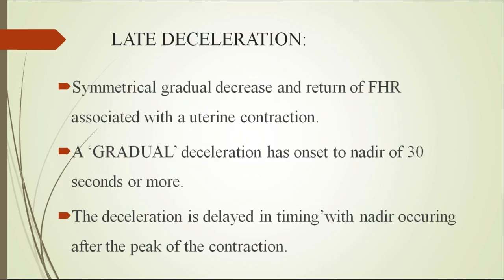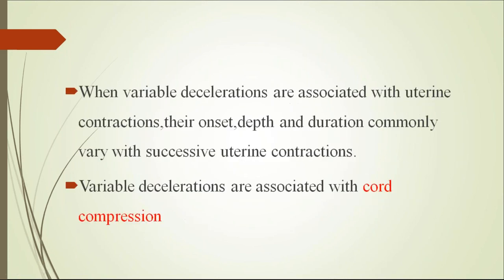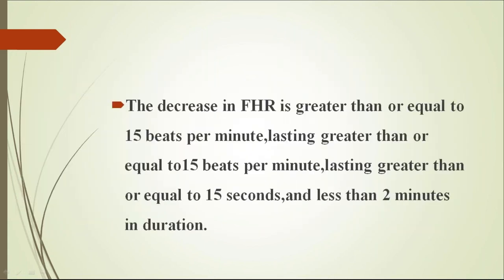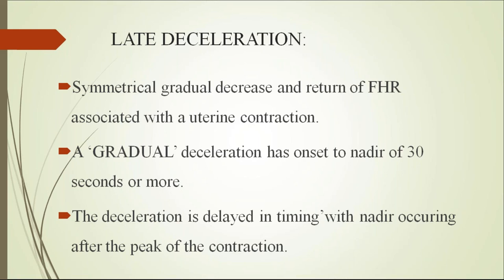Late deceleration: also a symmetrical gradual decrease and return of fetal heart rate associated with uterine contractions, but the deceleration is delayed in timing — the nadir occurs after the peak of the uterine contraction. After the contraction peak has passed, then the deceleration occurs. Late decelerations are seen in uteroplacental insufficiency.